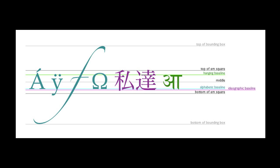In the diagram, top corresponds to the top of the so-called em square, not the top of the bounding box, and bottom corresponds to the bottom of the em square, not the bottom of the bounding box. The term "em" in typography has something to do with the height of a lowercase m — that's where it comes from.